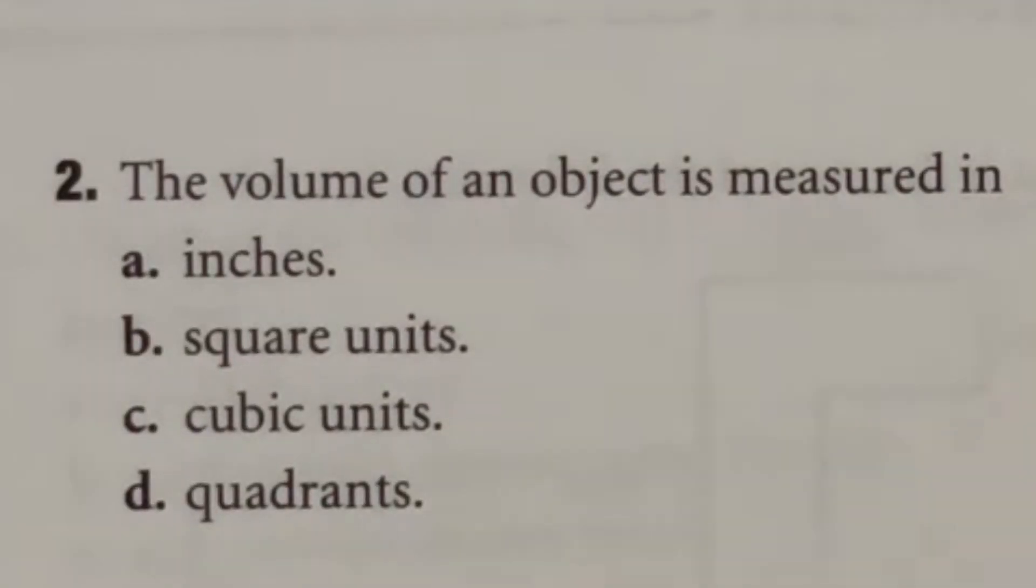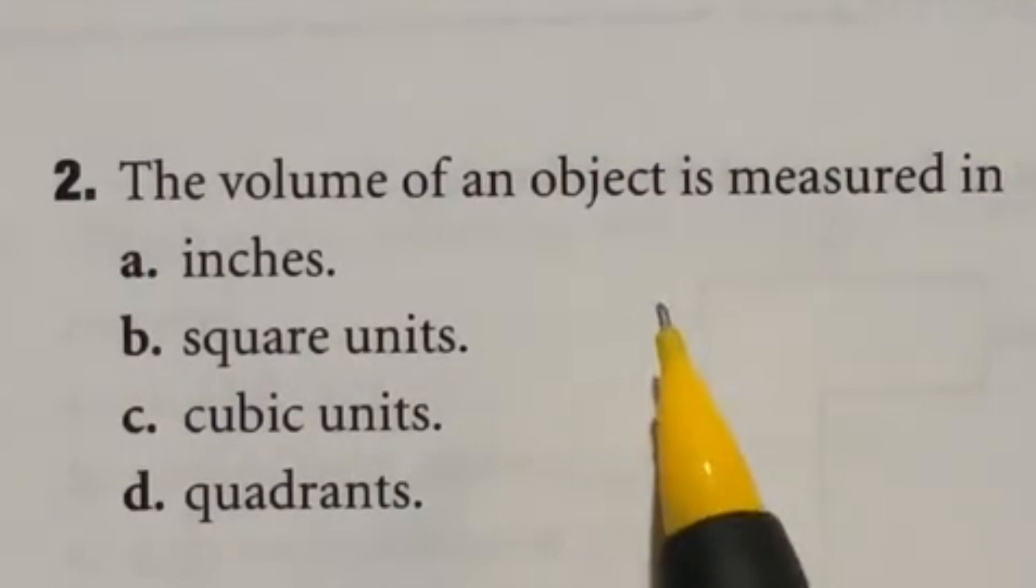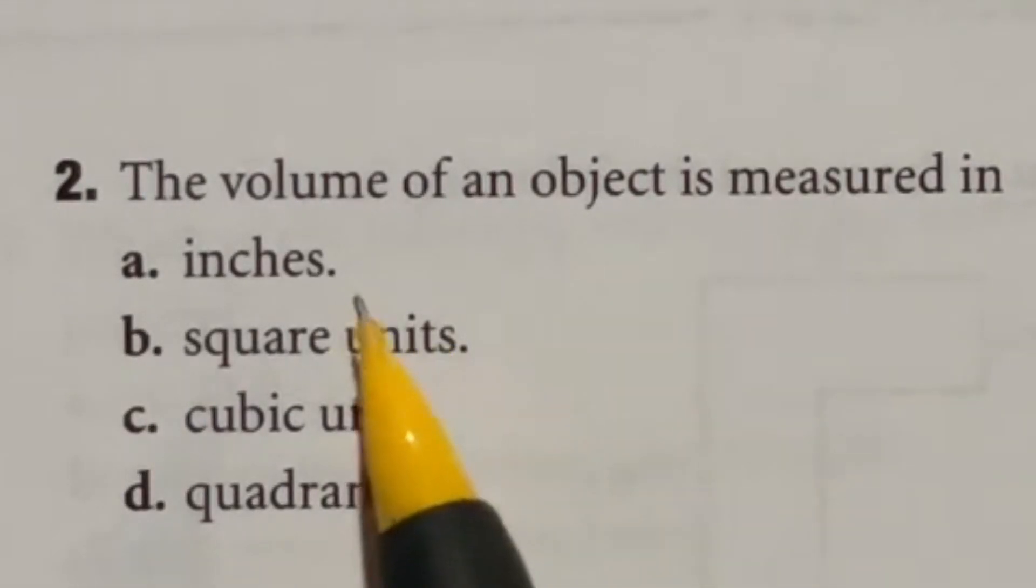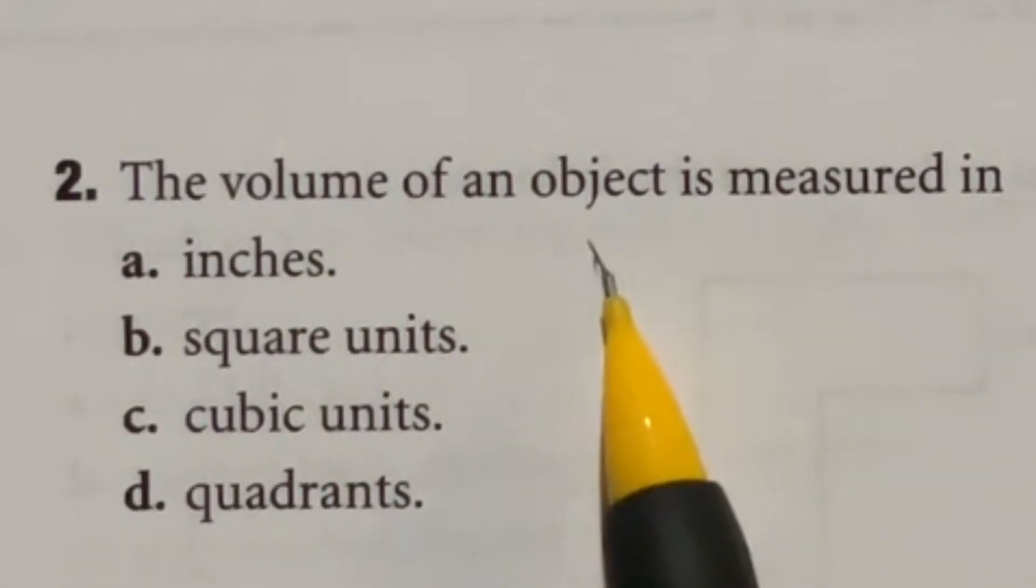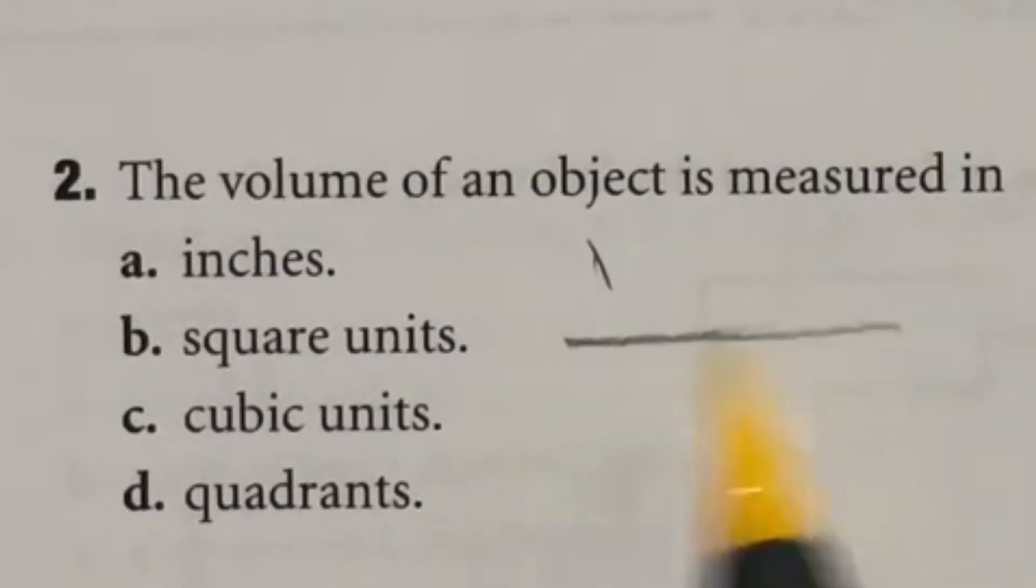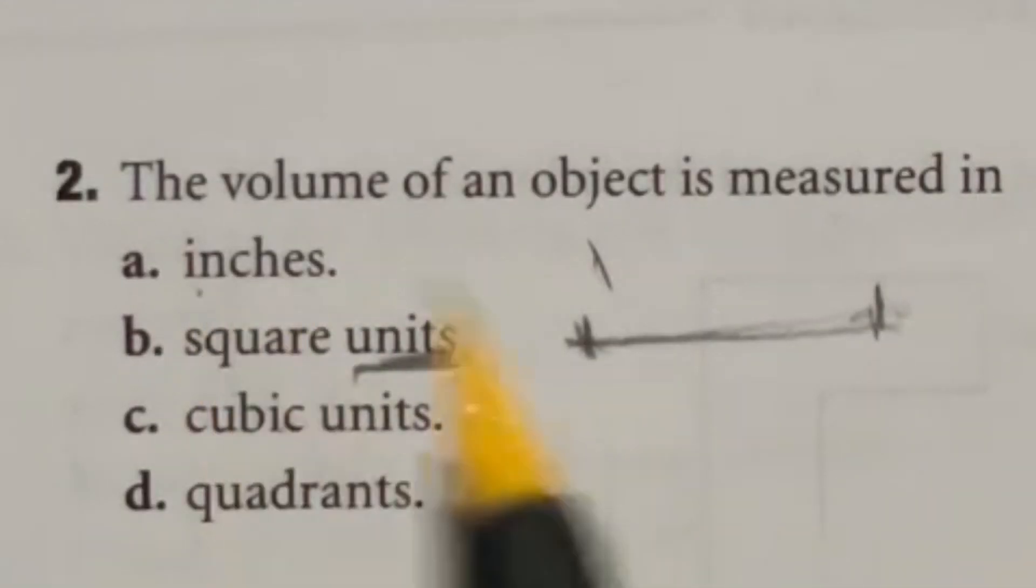Number two on the mathematical knowledge says that the volume of an object is measured in what. It has here inches, squared units, cubic units or quadrants. So this is talking about like the first dimension, second dimension, third dimension. So in the first dimension, we just have like dots or like a line, a collection of dots here. So you're measuring from like this guy to this guy, and that's in your standard unit, if that be inches or something else.